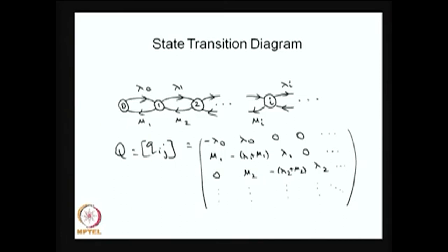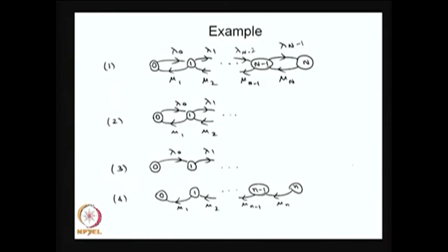Here are a few examples for the birth-death process. The first example is a finite state model with birth rates λ_0, λ_1, ..., λ_{n-1} and death rates μ_1, μ_2, ..., μ_n — this is a finite state birth-death process. The second example is an infinite state birth-death process. The third example has all death rates equal to 0, and the fourth example has all birth rates equal to 0.